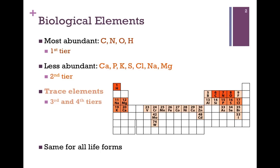Biological molecules are actually composed of only a small subset of elements from the periodic table, as illustrated in this figure. The most abundant biological elements include carbon, nitrogen, oxygen, and hydrogen — our so-called first tier of elements, shaded in bright orange in our figure.